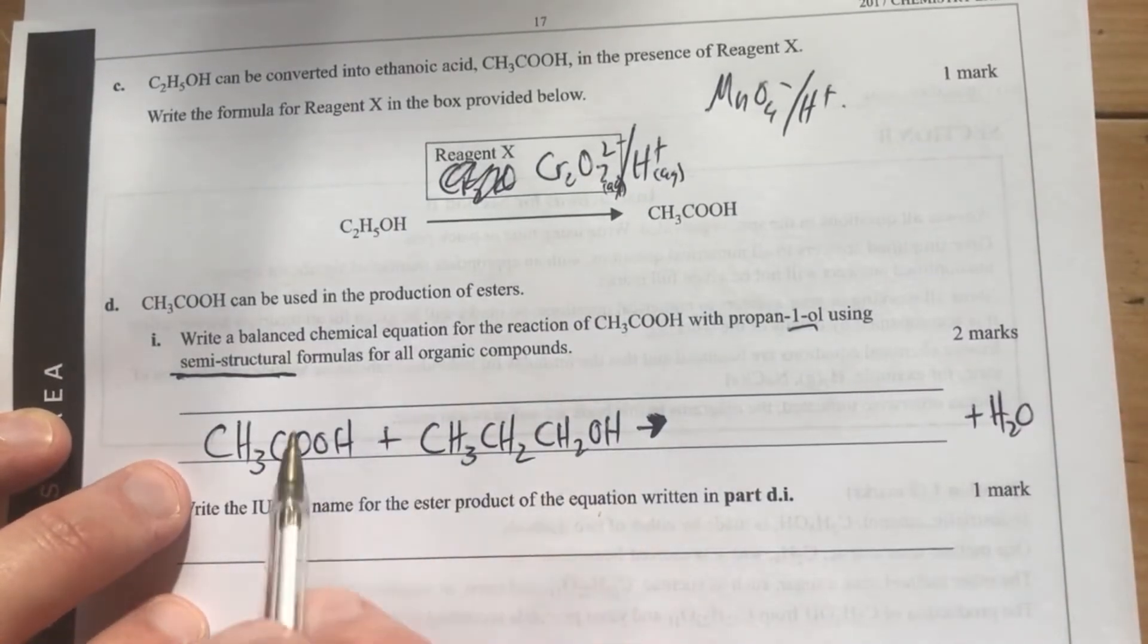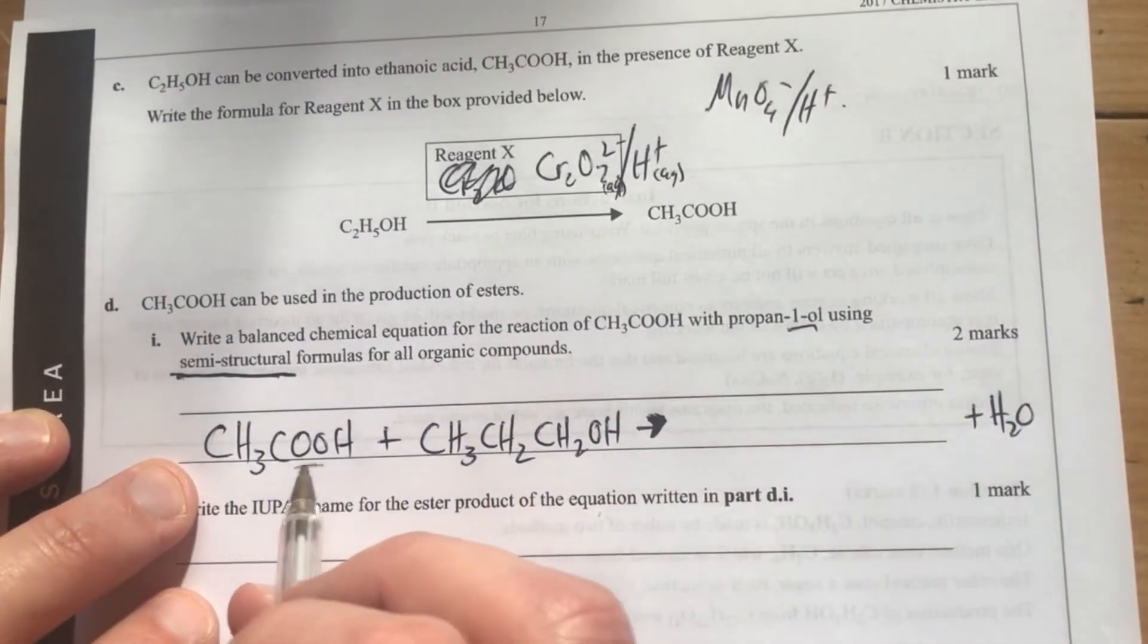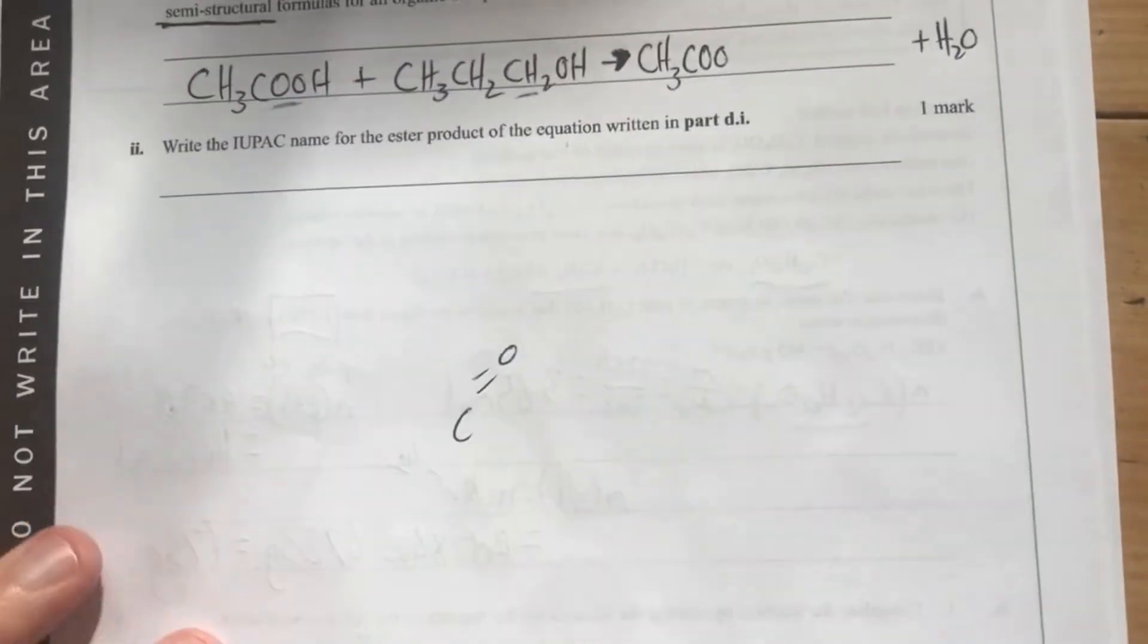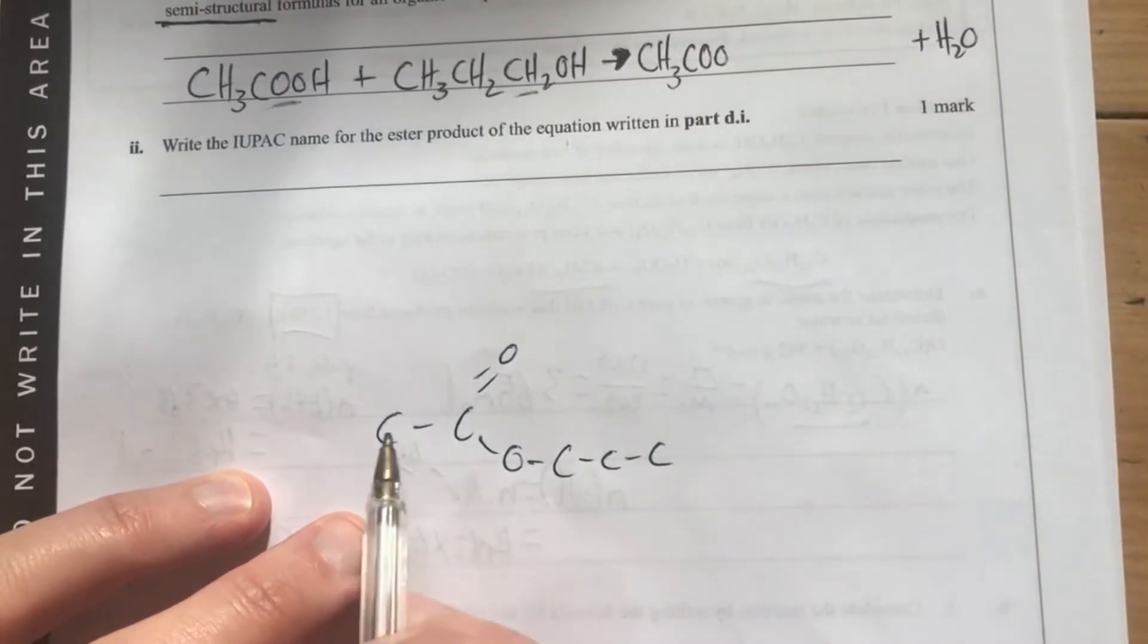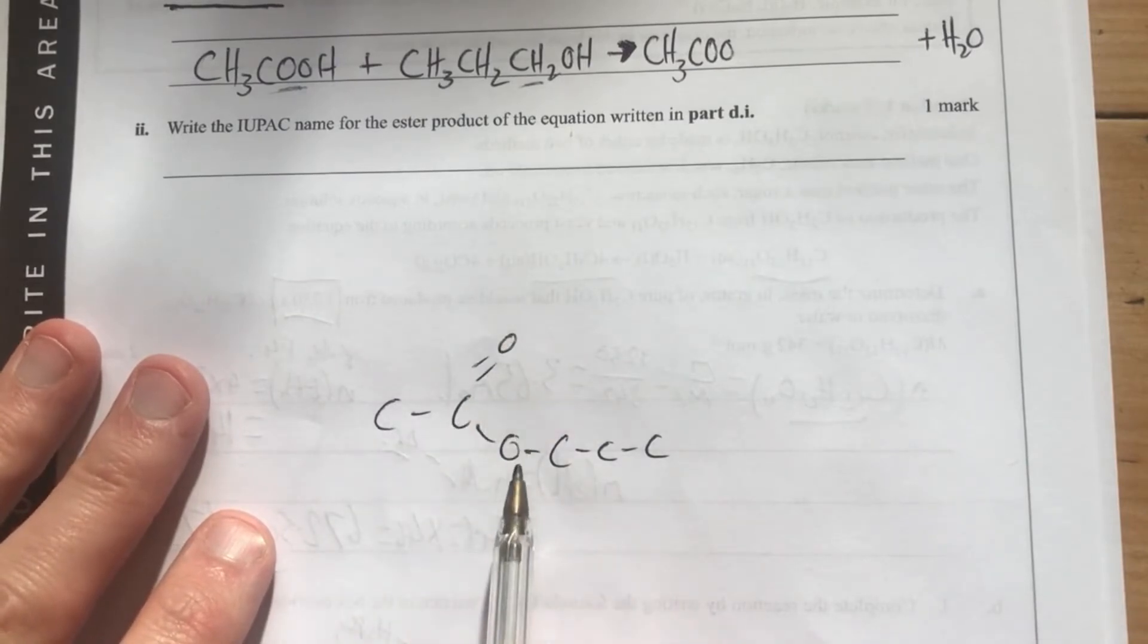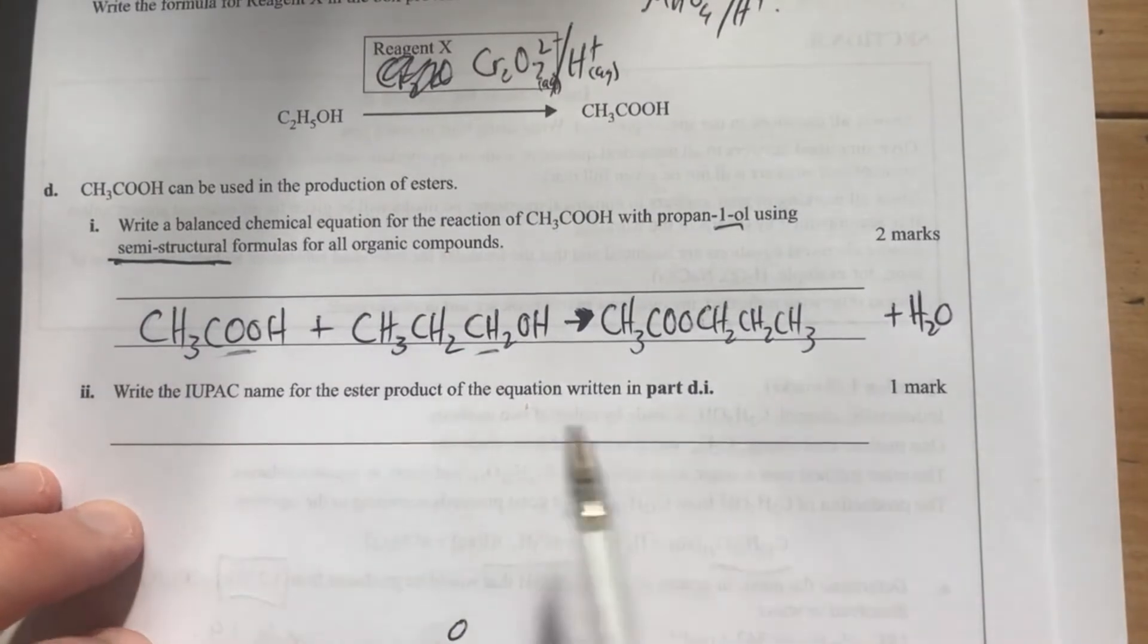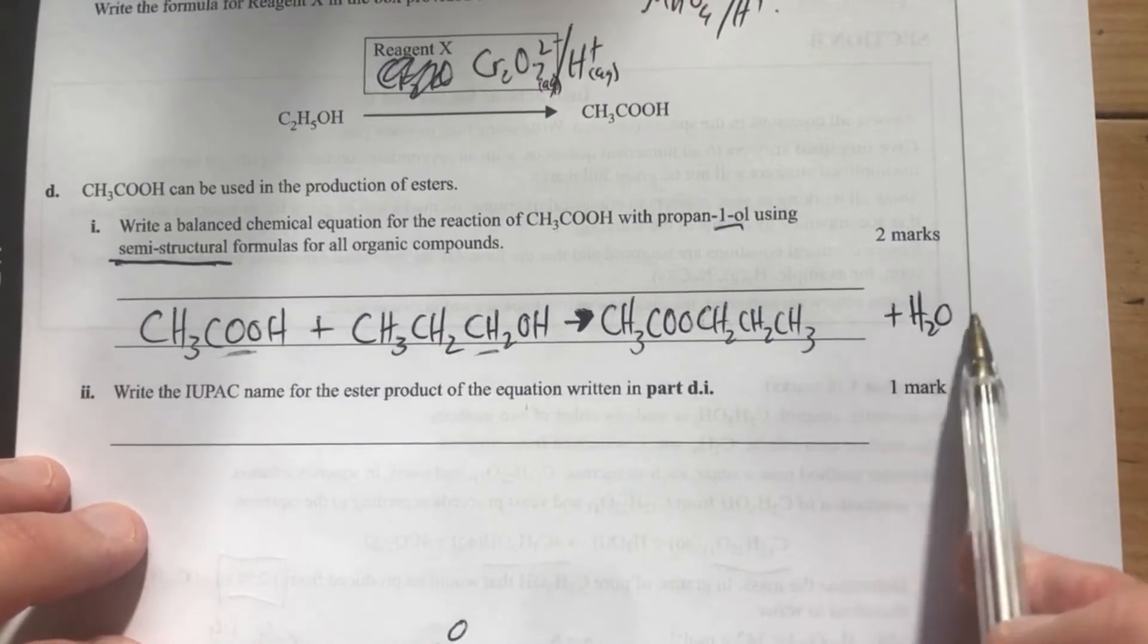Now, I need to think about how this is actually going to form. Our ester is going to form from these guys reacting. So therefore, it's going to be CH3COO. If I just do it out here, this is going to be what my ester looks like. Ethanoic acid, my propanol. So it's going to be CH3COO, then my propanol here, CH2CH2CH3. That's going to be my semi-structure reaction, remembering that I do have my order over here.